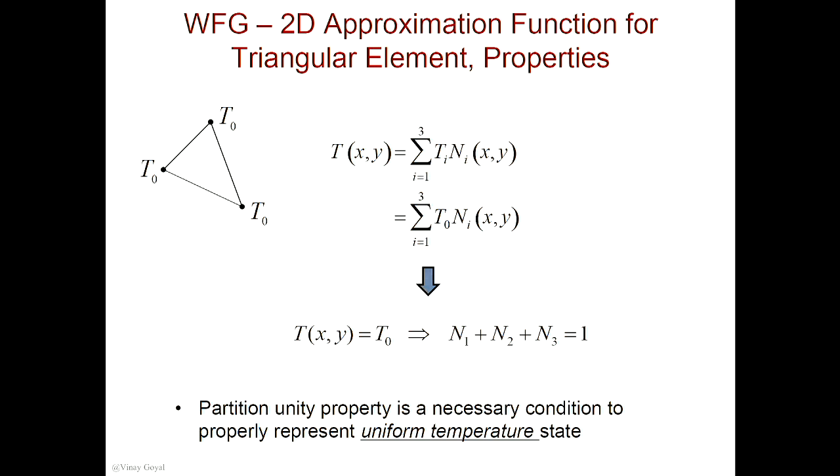My next step is to look at the approximation function, which was selected to be of this form. We selected the temperature to be equal to A plus BX plus CY, and I want to show you that the temperature field can be represented by a constant value as shown here. The gradient of this term will give me a constant value. So not only does the choice of approximation function allow you to represent a constant temperature state, it allows you to also represent the gradient of temperature as well.